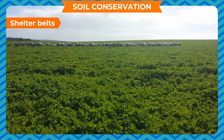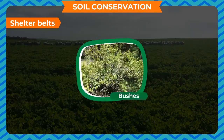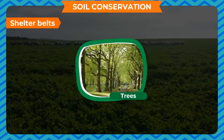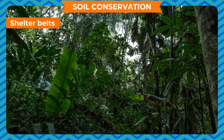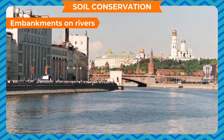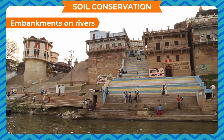Farmers grow hedges, trees, and bushes along the edges of their fields. These hedges, bushes, and trees work like windbreakers — they reduce the speed of wind and therefore minimize soil erosion.